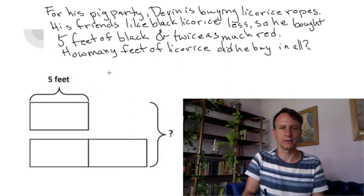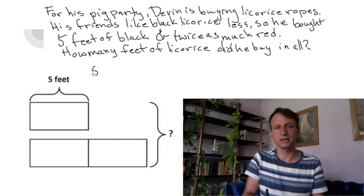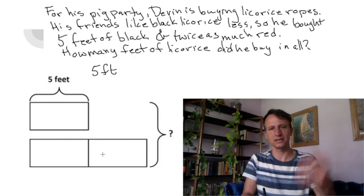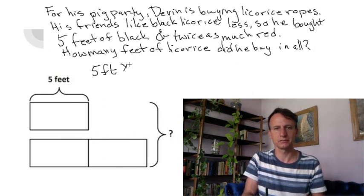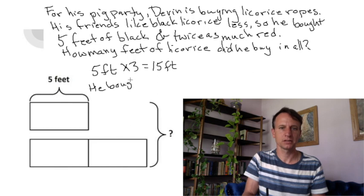All right, so anyway, the math is easier. The easiest way to do it is to just say five feet—yeah, we have three of these blocks, right? So we can just do times three, right, for a total of fifteen feet. Okay, so he bought fifteen feet.